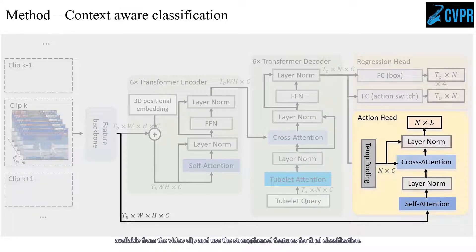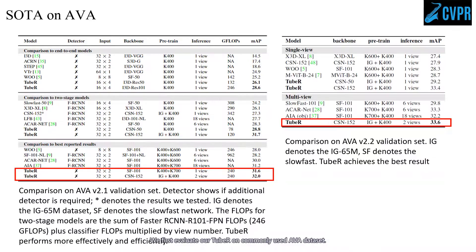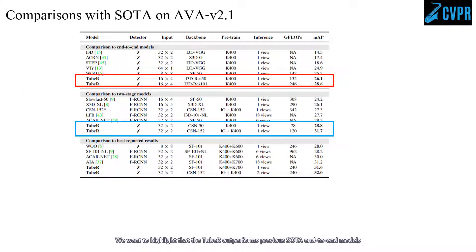We first evaluate TubeR on the commonly used AVA dataset. TubeR achieves state-of-the-art performance compared with previous work on both AVA 2.1 and AVA 2.2. We want to highlight that TubeR outperforms previous SOTA end-to-end models with a significant margin, as shown in red.